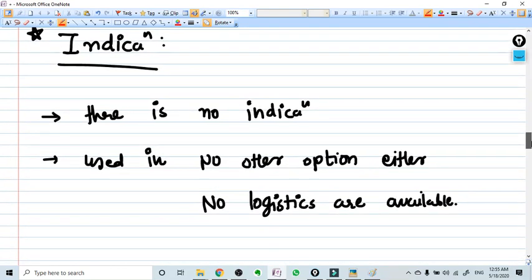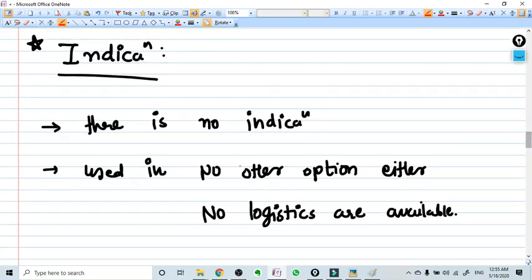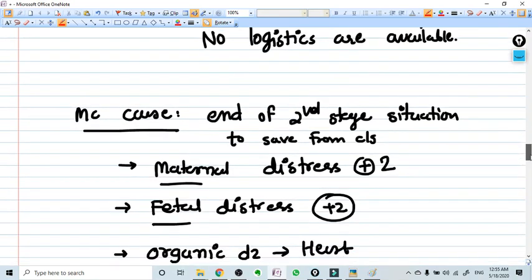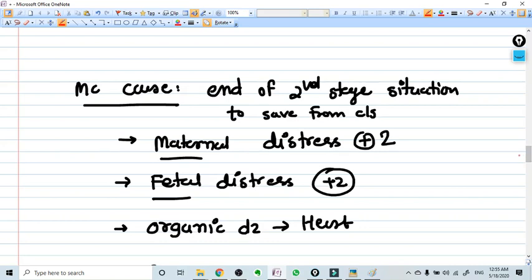Now what are the indications when you need to go for the forceps? Practically saying, there is no indication at this time for the forceps. Forceps are only used when we have no other option available or we don't have logistics available. What is the most common condition when we use the forceps? Whenever there is almost we have reached to the end of the second stage of the labor and now the labor is not progressing.